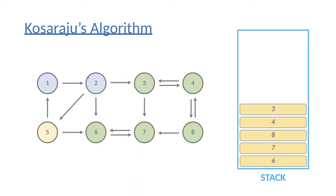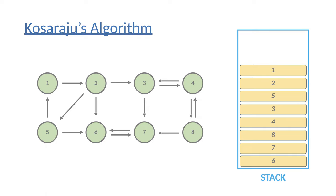After vertex three, we backtrack to vertex two. We have already visited vertex three and vertex six, but we haven't visited vertex five. So we continue the depth-first search and visit vertex five. For vertex five, we have to consider all of its children, but vertex one and vertex six have already been considered. So we set vertex five to be visited and push it onto the stack. Then we backtrack to vertex two — all children are now visited — so we push vertex two. Then we backtrack to vertex one and push it onto the stack.